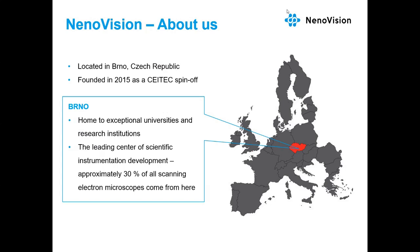NanoVision was founded in 2015 as a spin-off of Brno University of Technology and the Central European Institute of Technology. Brno is a city of universities, technology, and science with a rich history of microscope development. Both Thermo Fisher and TESCAN electron microscope divisions are located here — it's estimated that approximately 30% of all scanning electron microscopes in the world come from Brno.